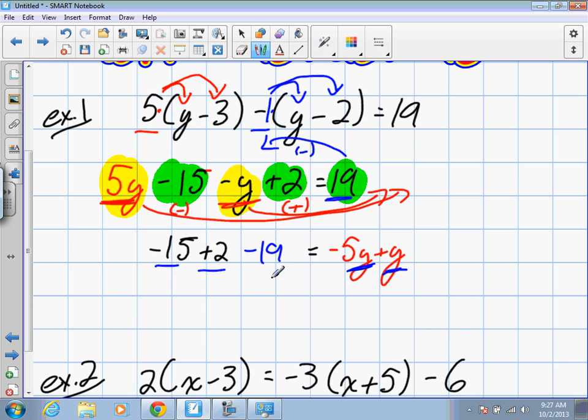So our next step is to collect all of our like terms. Negative 5y plus y will become what number? What's in front of this y? One. So what's negative 5 plus 1? Negative 4. Now we're going to collect three terms at once here. Because we're running out of room, I'm going to do it all in one step. Negative 15 plus 2? Negative 13. Negative 13 minus 19? Negative 32. Good. Very good.